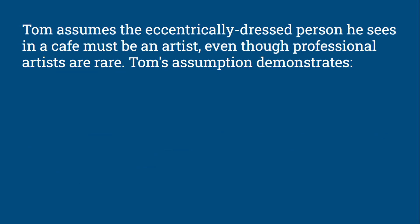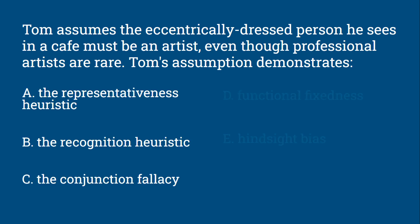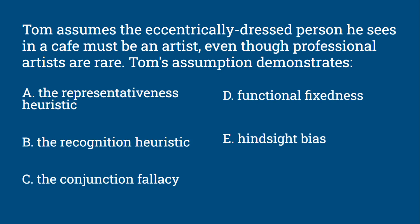Tom assumes the eccentrically-dressed person he sees in a cafe must be an artist, even though professional artists are rare. Tom's assumption demonstrates: the representativeness heuristic, the recognition heuristic, the conjunction fallacy, functional fixedness, or hindsight bias.